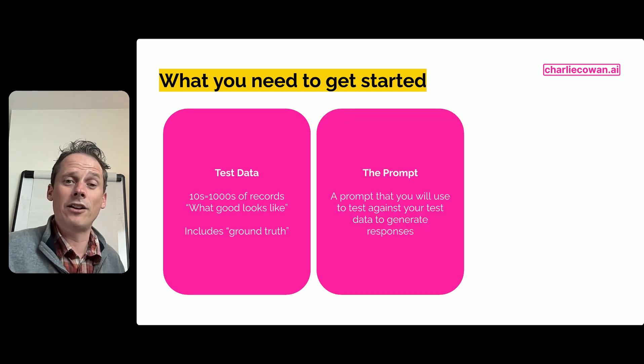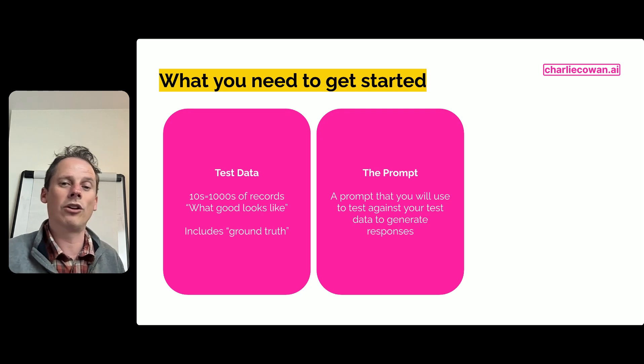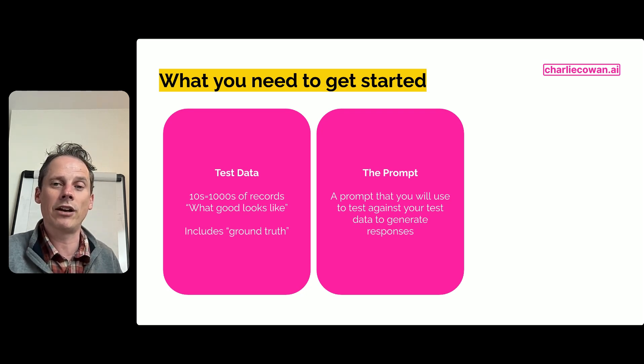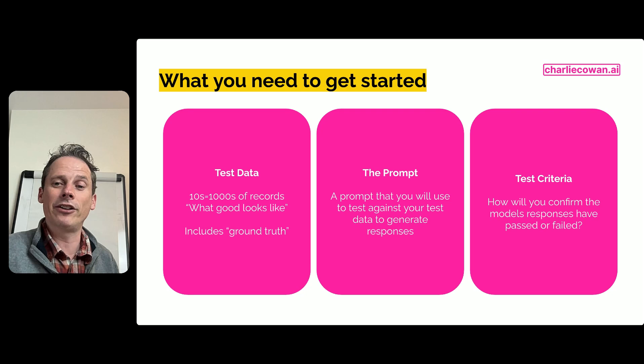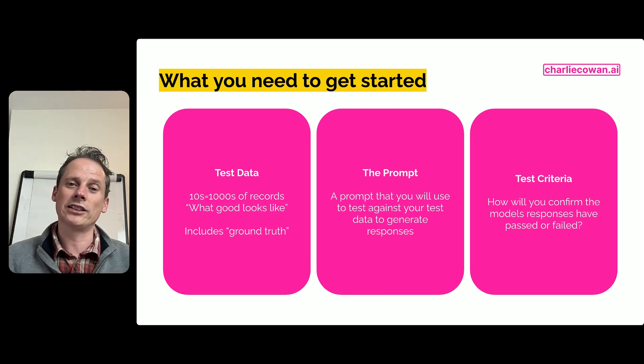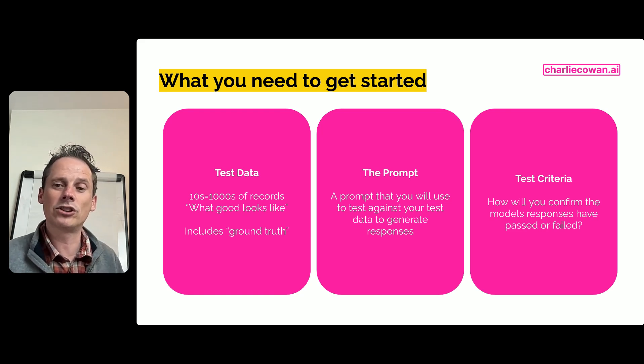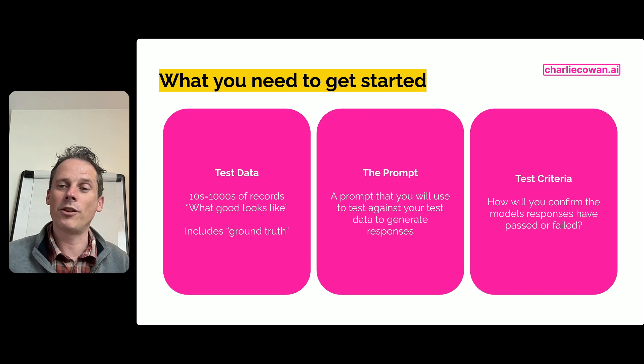Next up, we need the prompt. So when we take our thousands of test records, what is the prompt that we're going to use to test against all of those data records? And then the third part is our test criteria. So having got all of the responses that the AI model has provided against those thousands of records, how are we going to confirm that the model's response has passed or failed that eval?